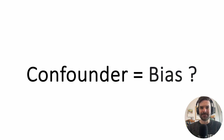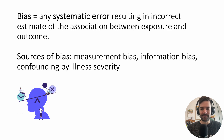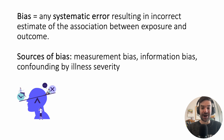You might have heard the term 'bias' — are confounding and bias the same thing? Bias is any systematic error resulting in an incorrect estimate of the association between an exposure and an outcome. Confounding is one source of bias — for example, confounding by illness severity. Other sources of bias include measurement bias, relating to how you measure your outcome, and information bias, relating to how subjects report information to you.